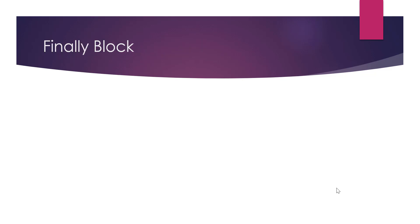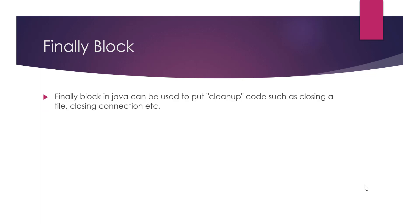Another block you can add to your exception handling is the finally block. The finally block is usually used to clean up after our code — whether we had an error or not, we want to do the same operation. We usually use it to close files after reading, or to close a connection like an internet source, whether an error happened or not. The finally block is optional — you do not have to put it — but if you do add one, you can only have one finally block. We saw we can have multiple catch blocks, but you can only have one finally block.